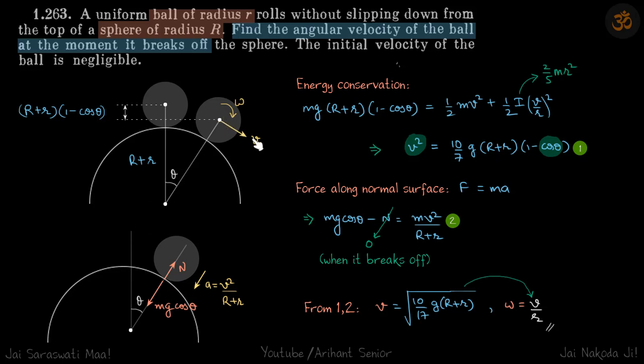So first, the velocity—we're going to get that from energy conservation. The center of this ball has come down by (R+r)(1-cos θ), assuming it has turned by an angle θ. So it will come from this equation: mg(R+r)(1-cos θ), work done by gravity, is equal to change in kinetic energy.